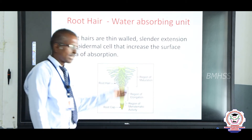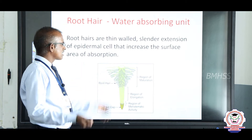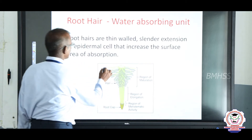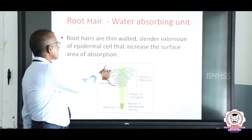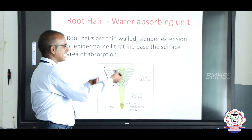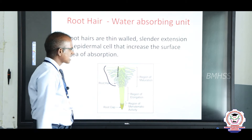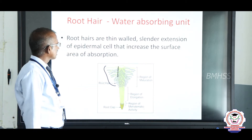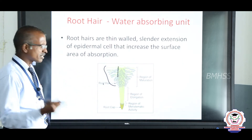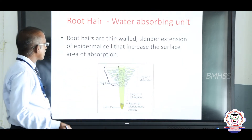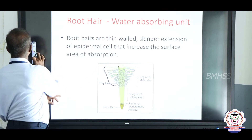Now we look at root hairs. When we pull up any plant, many millions of root hairs are formed. Root hairs are the absorption units. Root hairs are very thin, slender, lateral outgrowths or extensions from the epidermal cells. Root hairs increase the entire surface area for absorption of water.